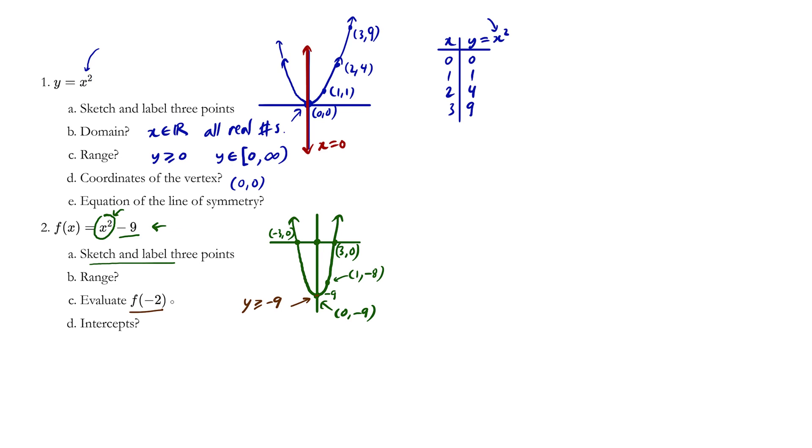Evaluate f of negative 2. So we're substituting negative 2 into the x value here, and negative 2 squared is 4. 4 minus 9 is negative 5.